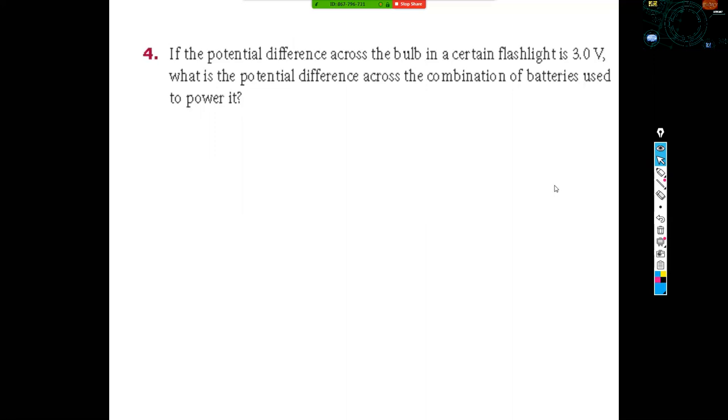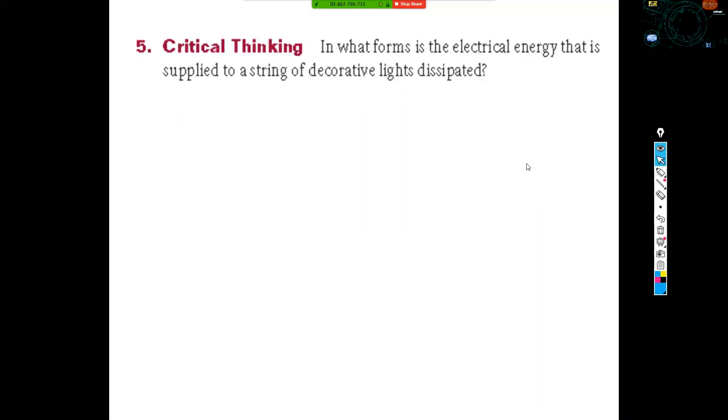All right. If the potential difference across the light bulb in a certain flashlight is three volts, what is the potential difference across the combination of batteries used to power it? If this is how much pressure is going to be available for that single light bulb, that's the same pressure or voltage that's going to be available being produced by that battery. So three volts. And what forms is the electrical energy? Remember, everything's about energy and electrical transformation here. Electrical energy supplied to a string of decorative lights. Well, what's the useful form of energy if you're dealing with light? Light. So electrical is going to be converted into light and you will get some heat as well.